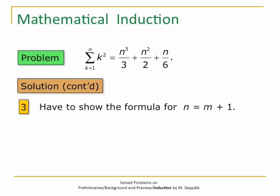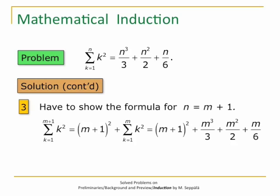To complete the proof by induction, we have to show that the formula also holds when N equals M plus 1. We start with the left-hand side: the sum k from 1 to M plus 1 of k squared equals M plus 1 squared — that's the last term — plus the sum k from 1 to M of k squared. Now summation k from 1 to M of k squared is of the form to which we can apply the induction assumption, so it equals M cubed over 3 plus M squared over 2 plus M over 6. We conclude that summation k from 1 to M plus 1 of k squared equals M plus 1 squared plus M cubed over 3 plus M squared over 2 plus M over 6.